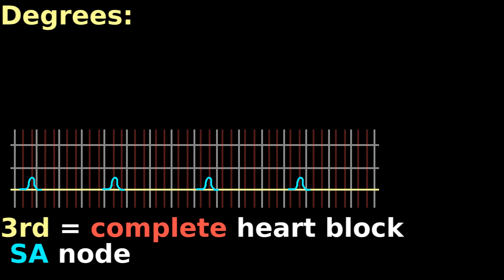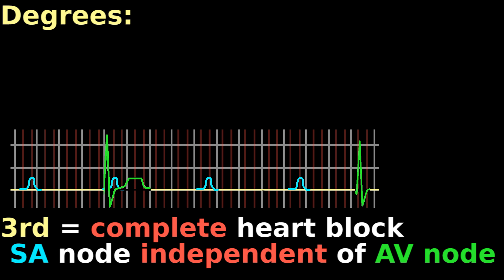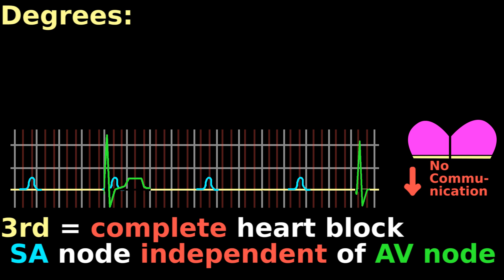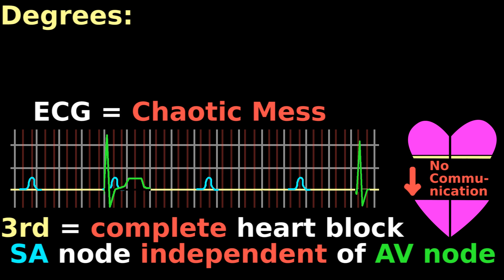Third degree is a complete heart block. This means that the SA node is signaling around 80 beats per minute, and the AV node, or something else, is signaling independently of the SA node, so there's no communication between when the atrium contracts and when the ventricles contract. This makes the ECG look like a chaotic mess, and the patient has got major problems.